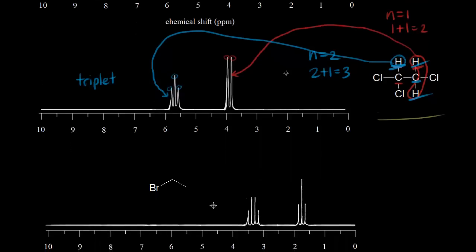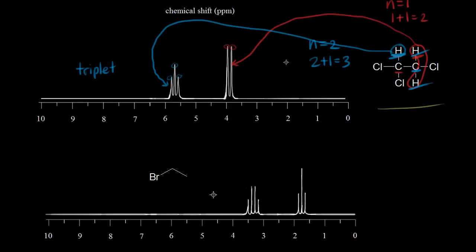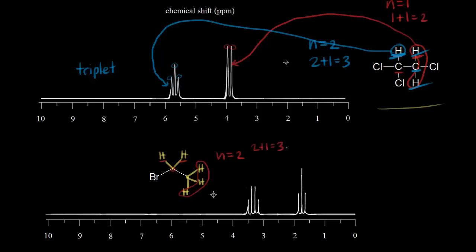Let's look at bromoethane. Let's first draw in the protons — on this carbon we have two protons, and on this carbon we have three protons. Let's start with the signal for these protons. How many neighbors do those protons have? We go to the carbon next door and we have one, two — two neighbors. So n is equal to two. We would expect n plus one peaks: two plus one is equal to three. We would expect a triplet for this signal. And here is our triplet — one, two, and three peaks.